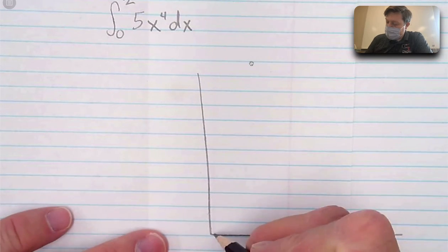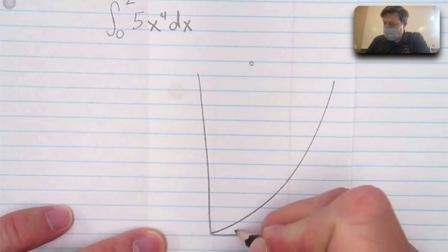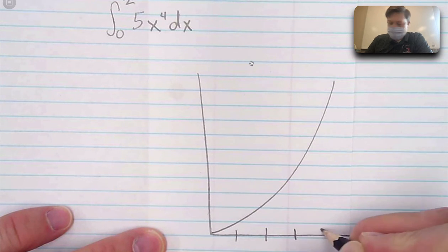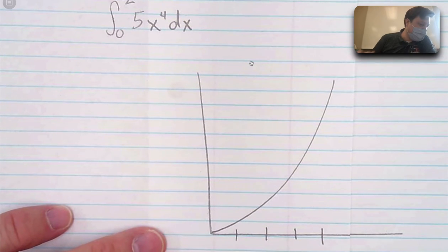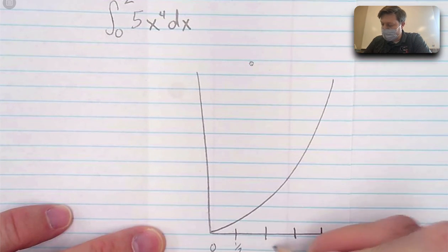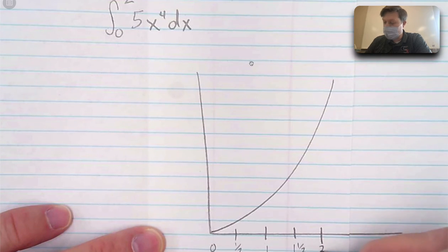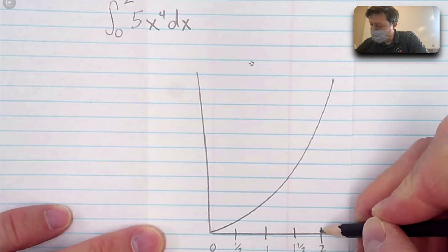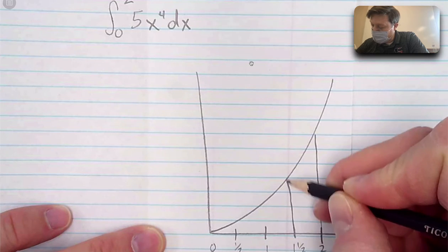And the function looks something like this. Okay? So from 0 to 2. Now what I notice is I want to have 4. So I've divided 1 half, 0, 1 half, 1, 1 and 1 half, and 2 for my interval here. And so I need to figure out what all of these y values are.